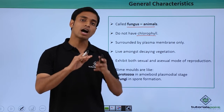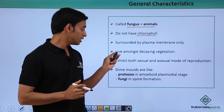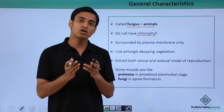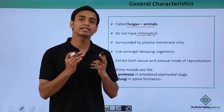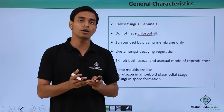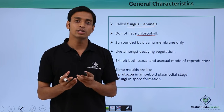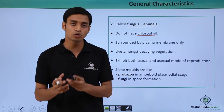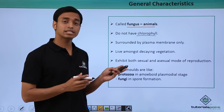Slime molds mostly live along decaying vegetation. Since they are not photosynthetic, for nutrition they are basically dependent on dead and decaying organic matter of plants and animals. This decaying matter serves as food for these slime molds.